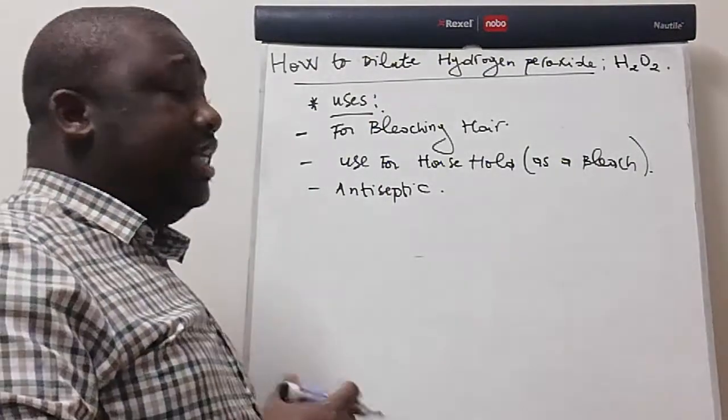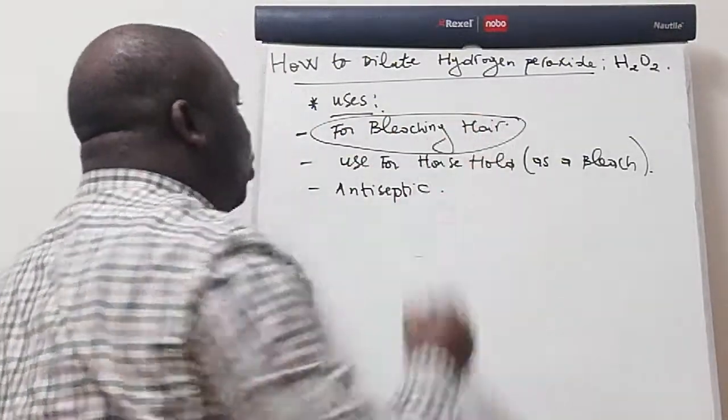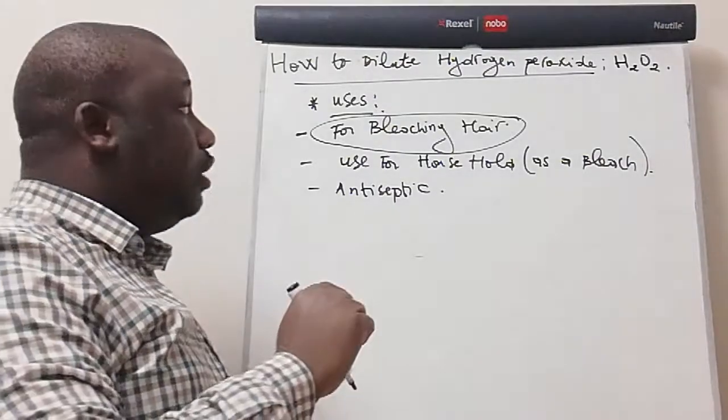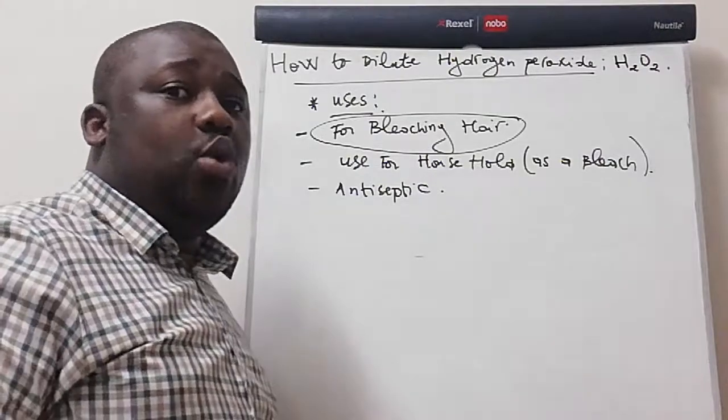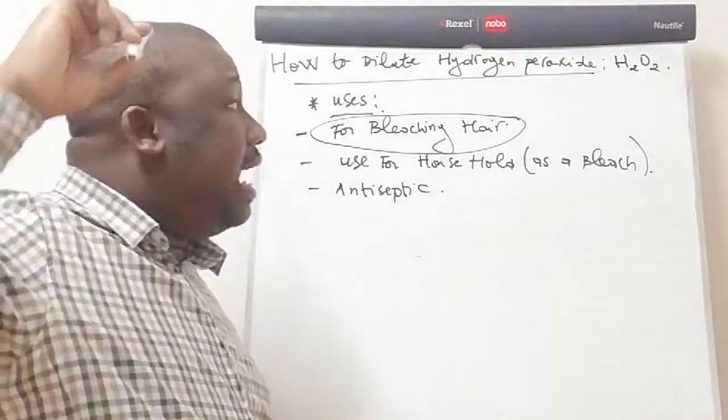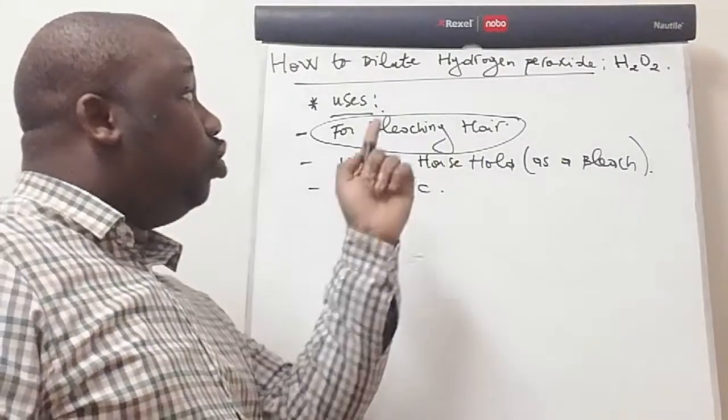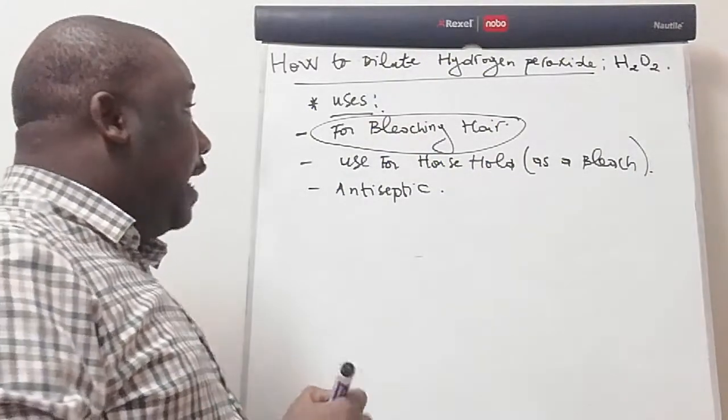But for today, we're going to focus on diluting hydrogen peroxide to obtain a bleaching agent for hair. When you see people dyeing their hair, and then the hair color changes into white or yellow, they will be actually making use of hydrogen peroxide.